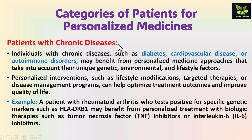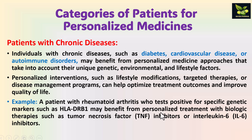Patients with chronic diseases like diabetes, cardiovascular disease, or autoimmune disease can also benefit from personalized medicine approaches, taking into account their unique genetic, environmental, and lifestyle factors. Optimized treatment improves quality of life, and disease management programs are designed for them. For example, a patient with rheumatoid arthritis who tests positive for specific genetic markers like HLA-DRB1 may benefit from personalized treatment with biological therapies such as tumor necrosis factor inhibitors or interleukin-6 inhibitors.